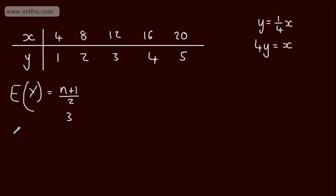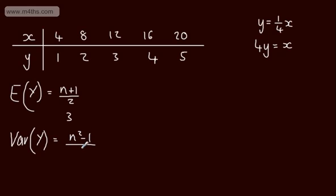Looking at Var(y), this is going to give me n squared minus 1 over 12. Squaring 5 gives 25, so 25 minus 1 over 12 gives me 2. So Var(y) equals 2.